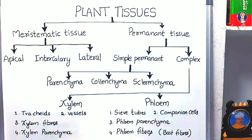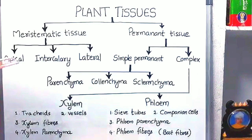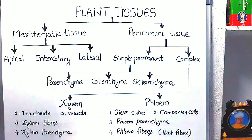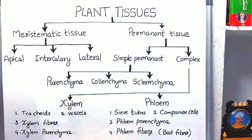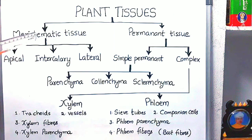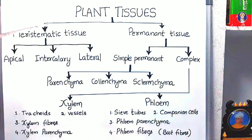Hello, welcome to all. Today I am going to explain about the concept of plant tissues with the help of this flowchart. What is tissue? Tissue is a group of cells which perform a common function in the plant body.